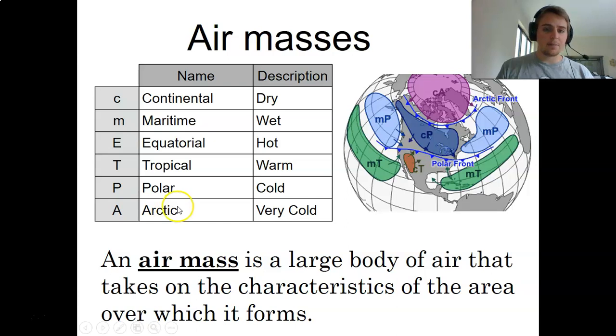E is equatorial, it's right at the equator, usually very warm. T is tropical, just above or just below the equator, nearby. Polar is very cold, close to the poles but not quite at the poles. And then A is Arctic and or Antarctic, fully at the poles, all the way at the edge of the Earth. These are very, very cold. You can see these here again.